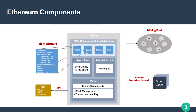A block is a package of data that has zero or more transactions, contains the hash of the previous block, and some metadata. A miner adds blocks to the blockchain — miners are nodes in the blockchain network who find new blocks, confirm transactions, and commit new transaction blocks, getting rewarded by mining. Proof of work is the activity that miners undertake to write transactions to new blocks.